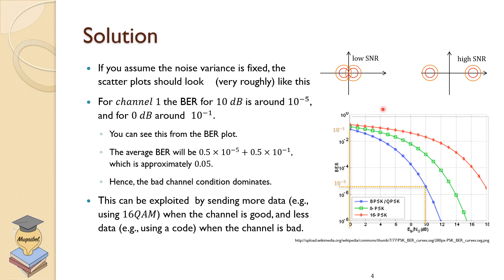This can be improved. This can be exploited by sending more data when we are in this time. For example, we can use 16 QAM. And when we are in the bad channel, we can send less data or no data. So it depends on what optimizes the scenario. So we can send more data when we are here. And for the remaining part of the time, we should send less data. That will improve the performance.